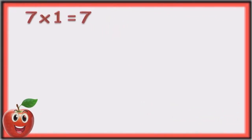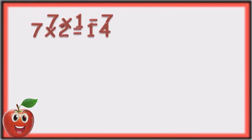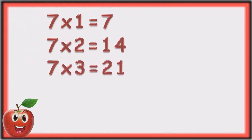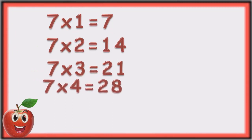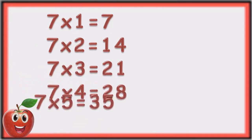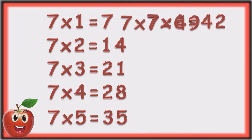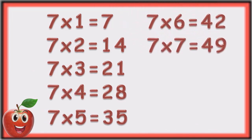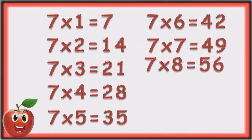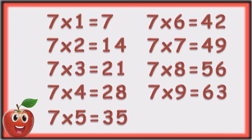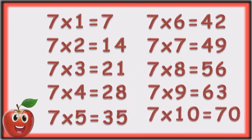Seven ones are seven. Seven twos are fourteen. Seven threes are twenty-one. Seven fours are twenty-eight. Seven fives are thirty-five. Seven sixes are forty-two. Seven sevens are forty-nine. Seven eights are fifty-six. Seven nines are sixty-three. Seven tens are seventy.